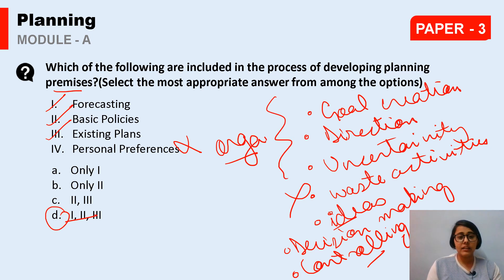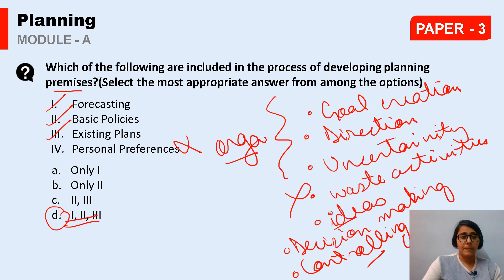So the right answer for that question is D — 1, 2, and 3: Forecasting, Basic Policies, and Existing Plans. All these things are part of developing planning premises.